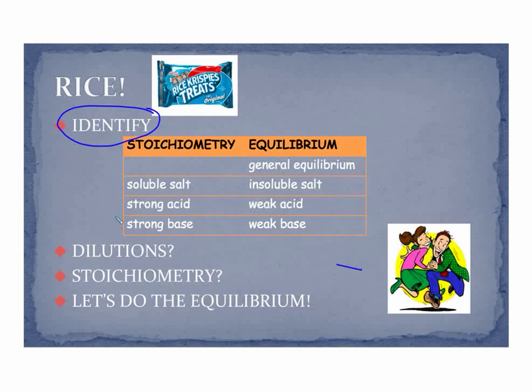Either make a list or write it above the substance. We may have general equilibrium, typically gaseous or aqueous equilibrium. It could be a soluble salt - you need to recognize your soluble salts. You may have an insoluble salt. Strong acids, next chapter, will come into play, but this framework works for all of these.